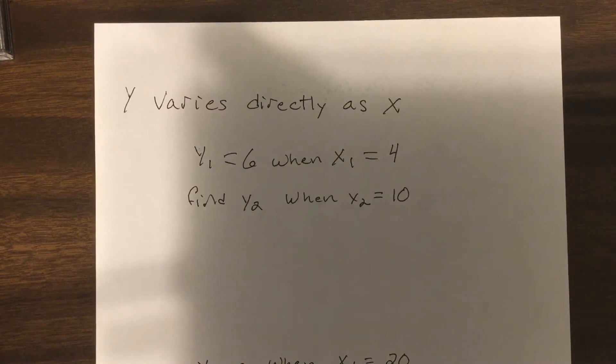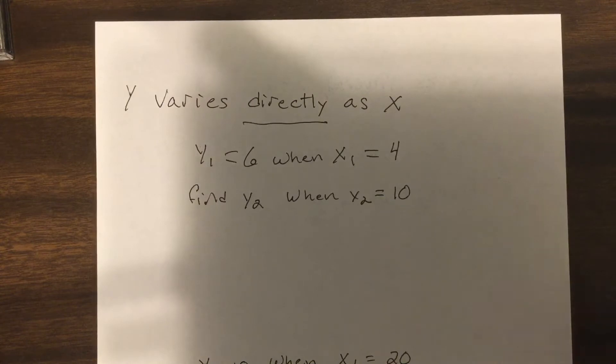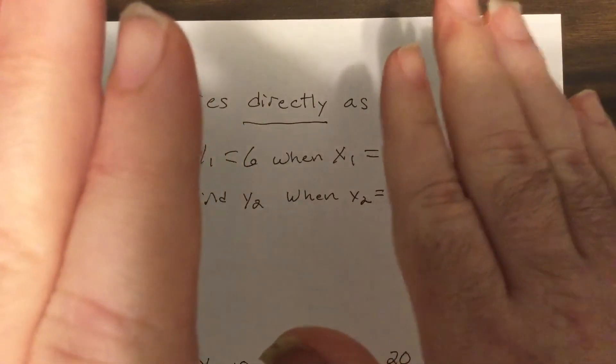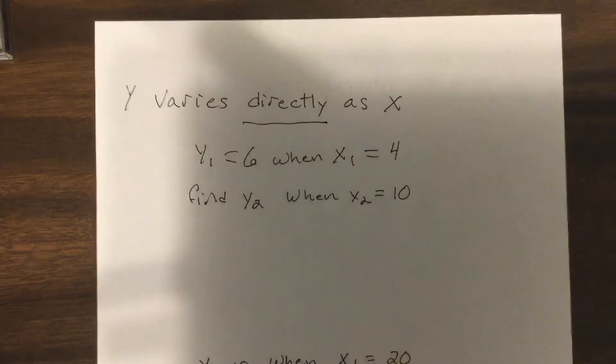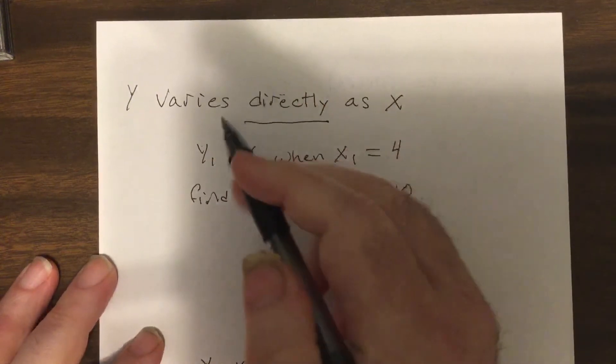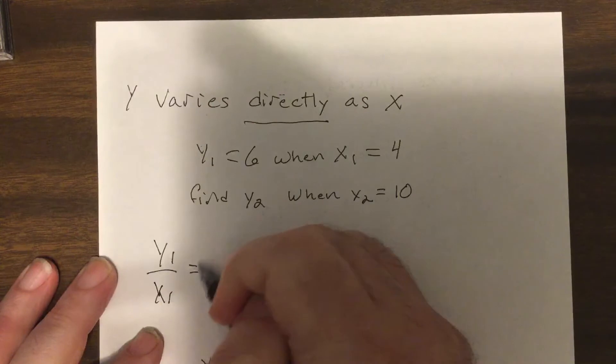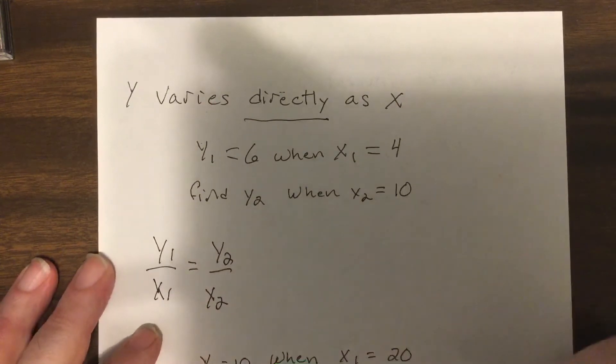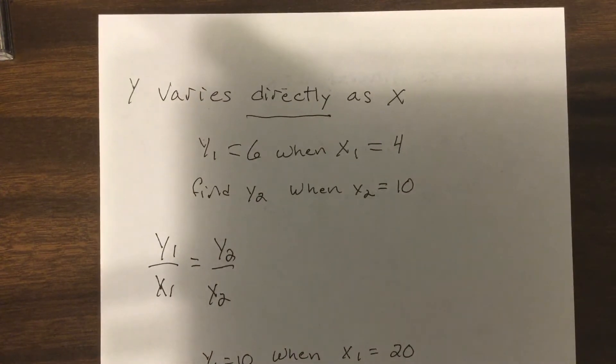Today I want to start with variation. There's two types of variation: directly and inversely. I'm gonna start with directly. Remember, directly is as one gets bigger the other one gets bigger; as one gets smaller the other one gets smaller. So the formula, as soon as you see varies directly or directly proportional, it's y₁ over x₁ equals y₂ over x₂. First set up your variables.